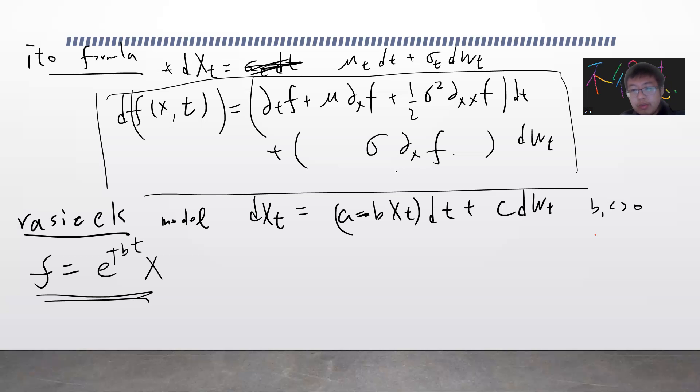In the previous video I solved the geometric Brownian motion. I solved dX = σX dWt + μX dt. The way to solve this is to introduce f = log X and do the differential by plugging f = log X into Itô's formula.